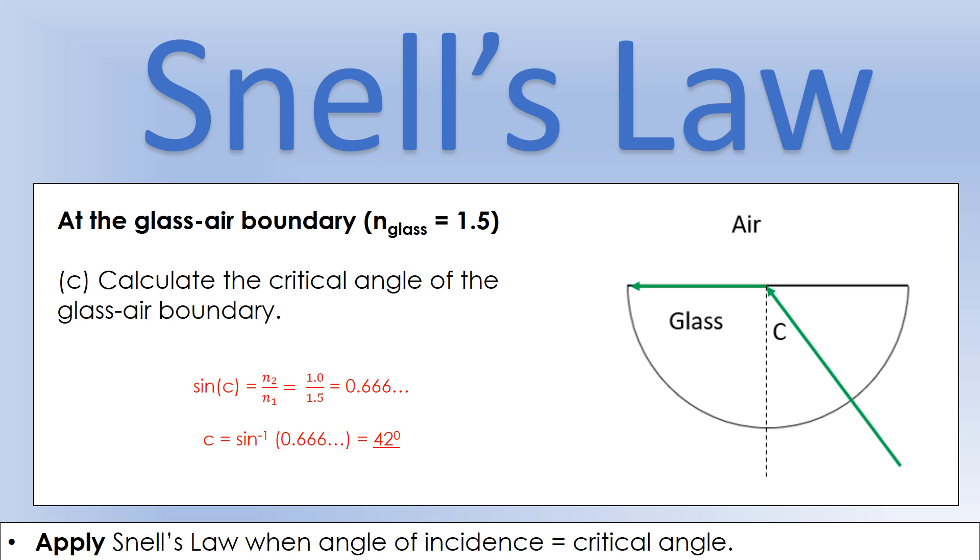We can plug our values of n2 and n1 in. A quick thing to look out for: on the top line should be the bigger value because you can't have sines greater than one, so your bigger refractive index would have to be on the top line.